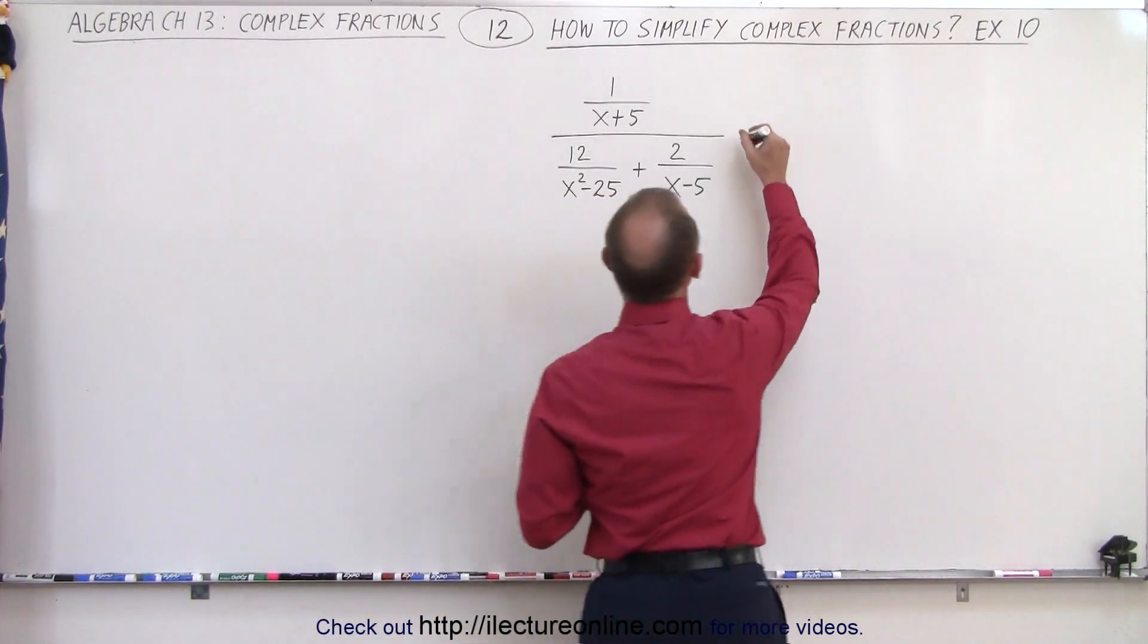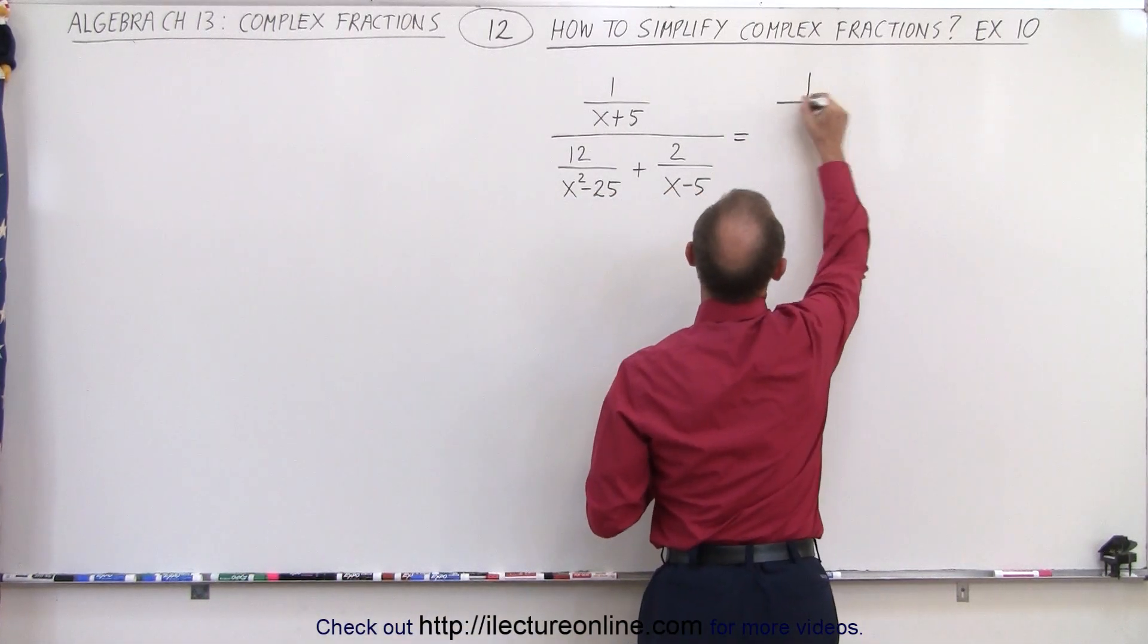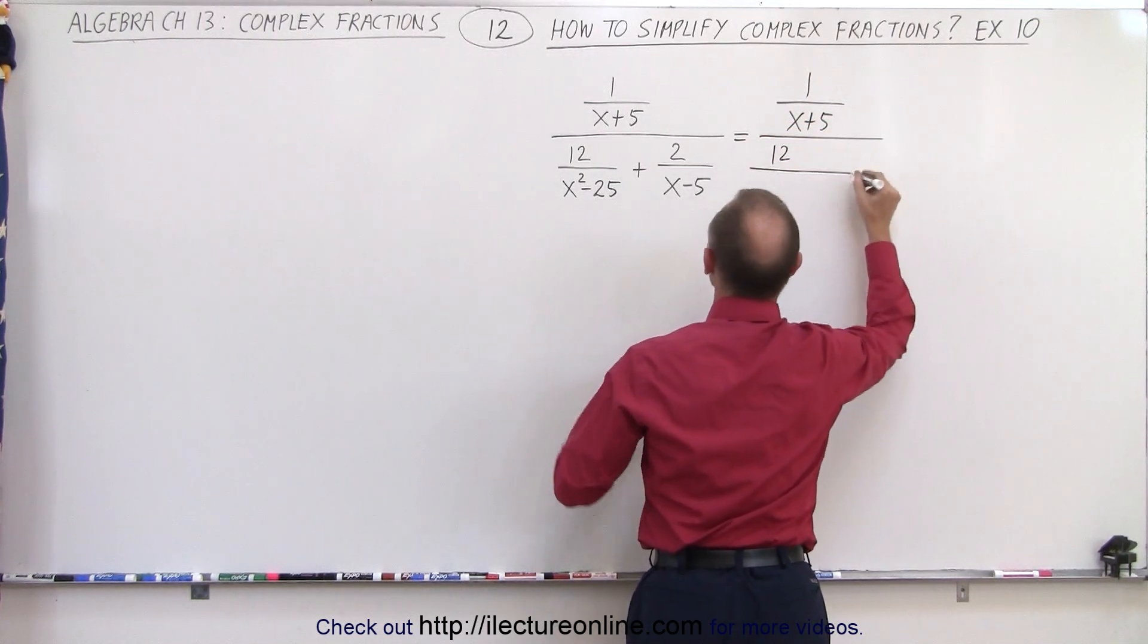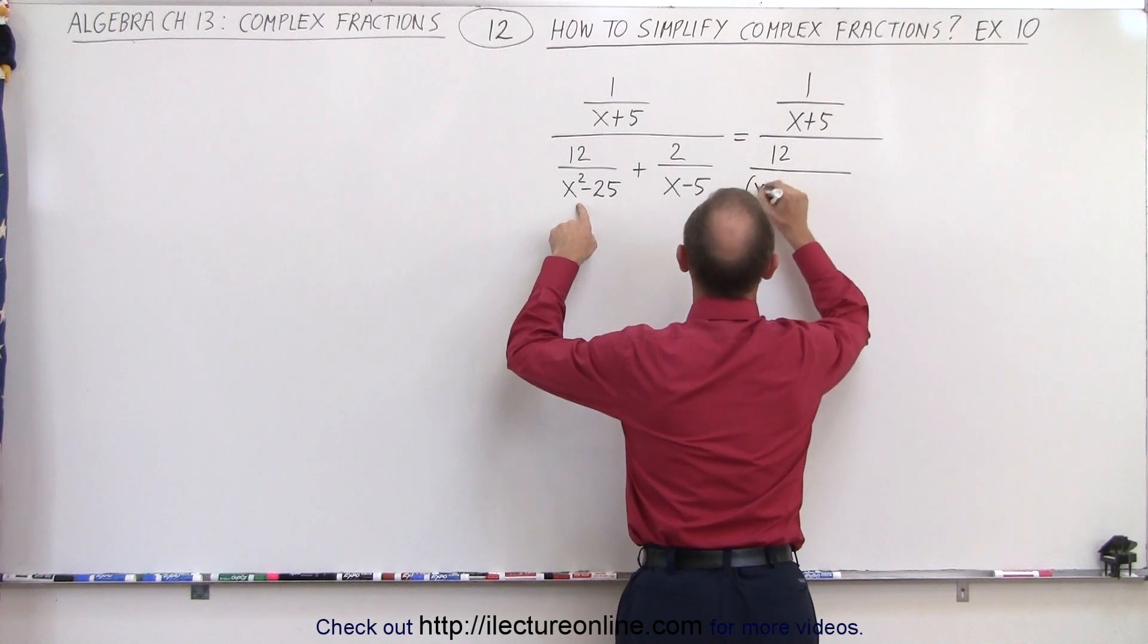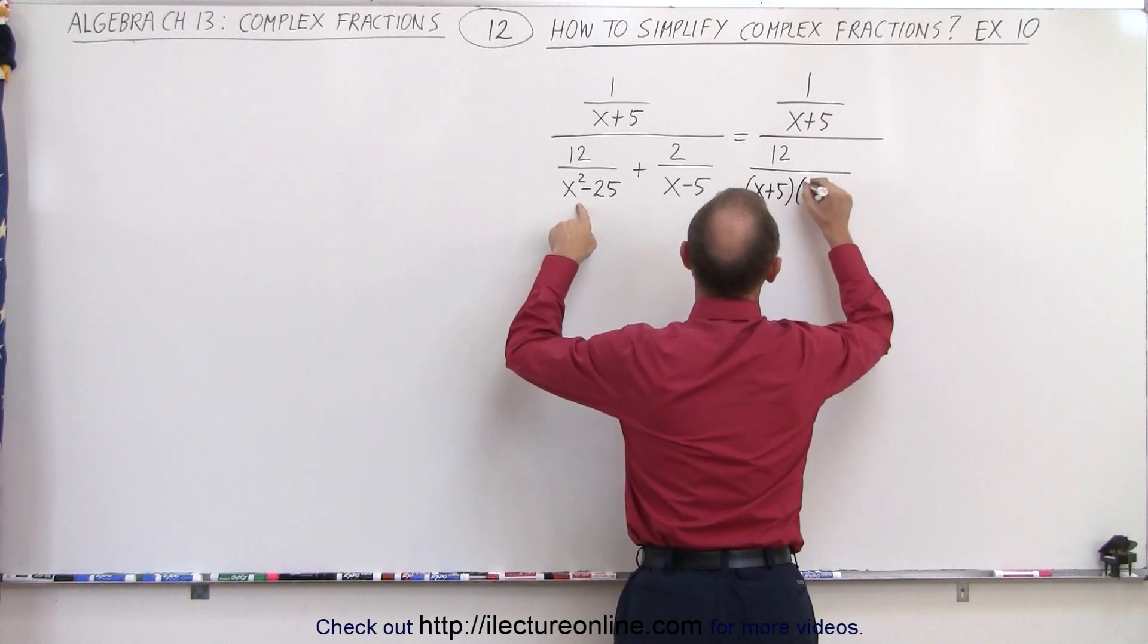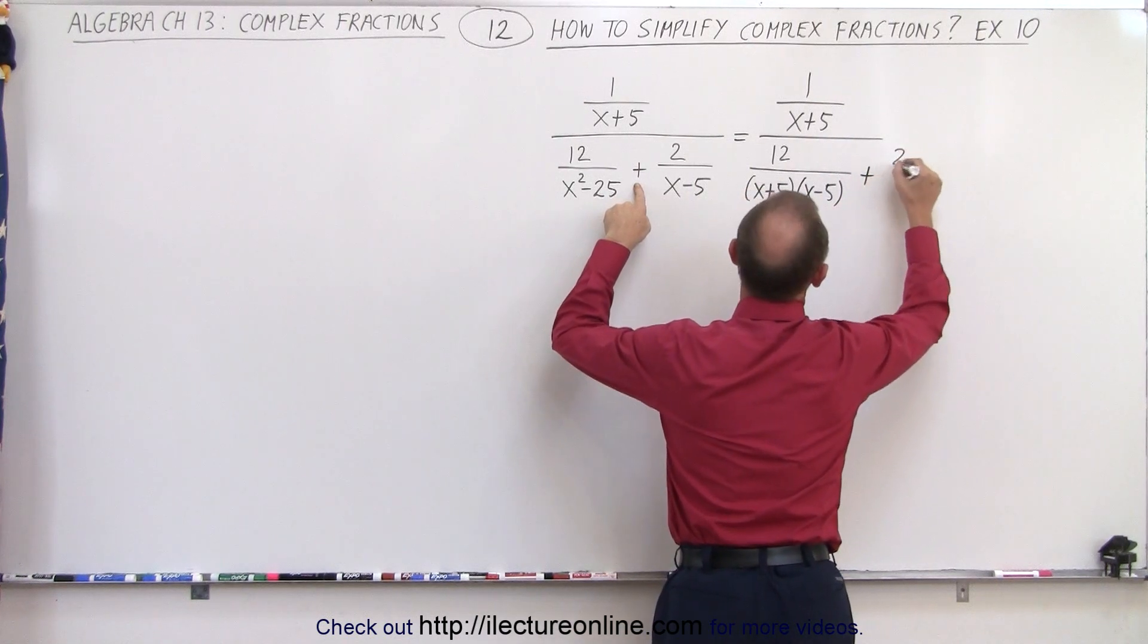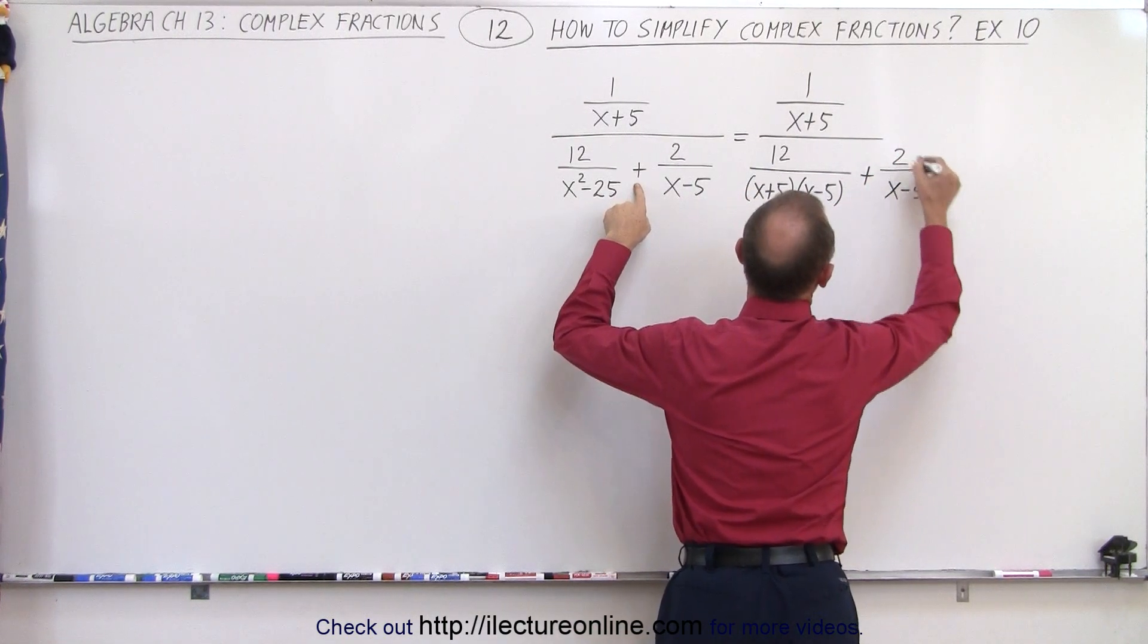So let's rewrite this. This is equal to 1 over x plus 5, divided by 12, divided by, here we write this as x plus 5, times x minus 5. And then we have plus 2 divided by x minus 5.